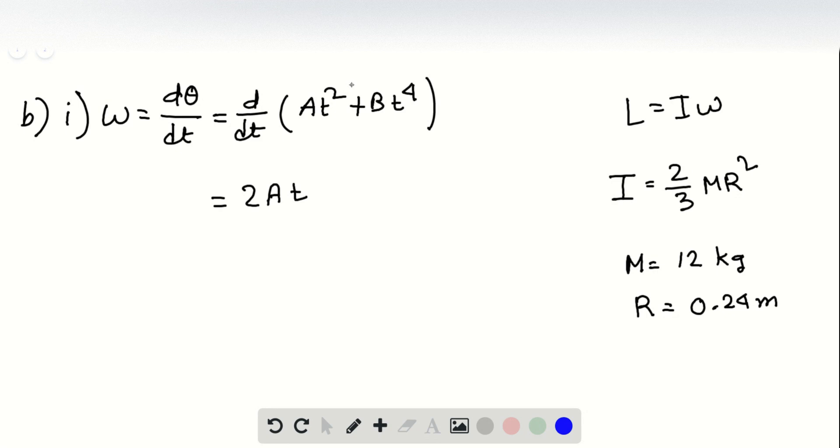Similarly for B, 4 gets placed before B, so we have 4B, then this gets reduced by 1, so 4 minus 1 gives us 3, so that's t cubed, right? So this is our omega. Now omega at t equals 3 seconds,